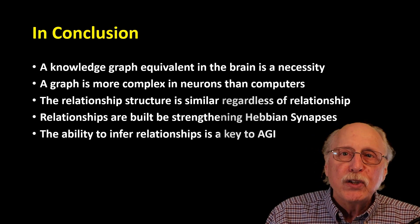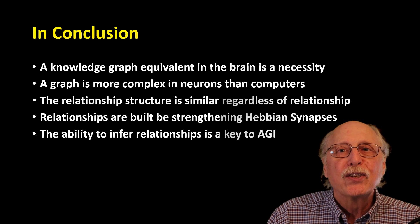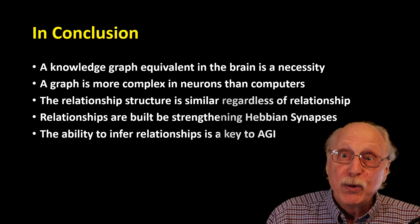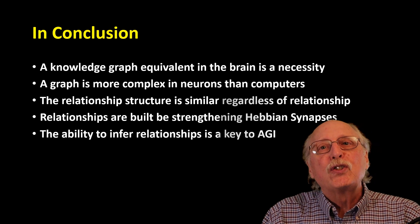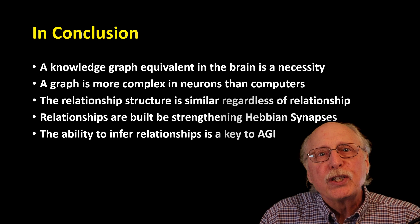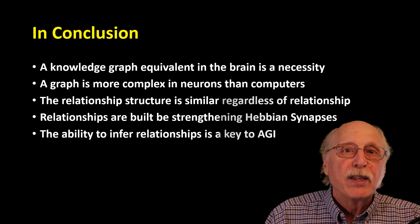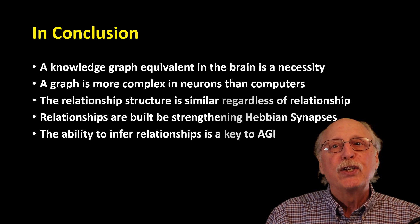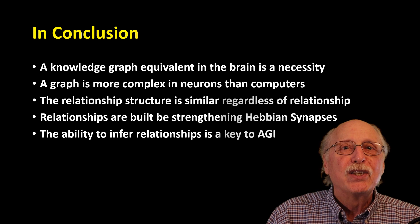In neurons, you can't simply add edges and edge types whenever you need them because the process is too slow. In the computer, you can. I've just discussed two relationship examples, hue and brightness, but the relationship structure is similar regardless of the number and types of relationships, and the process of creating a relationship between two objects involves strengthening a few Hebbian synapses.